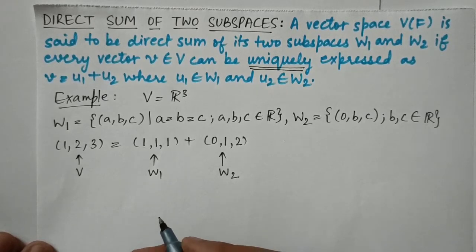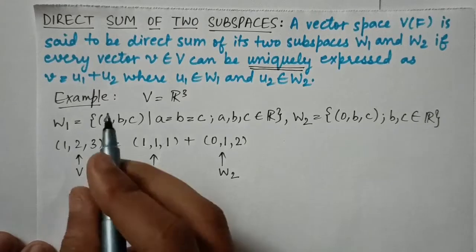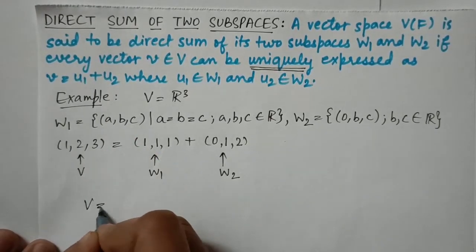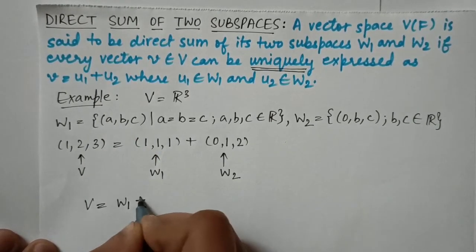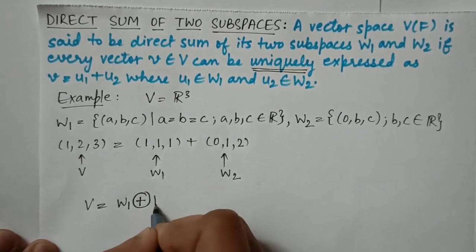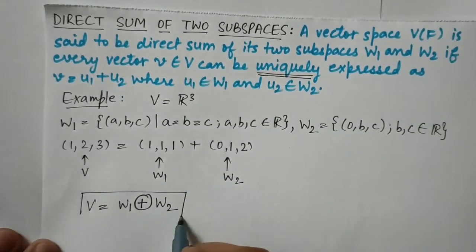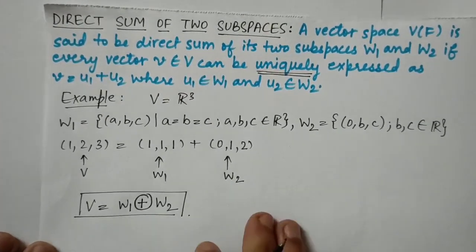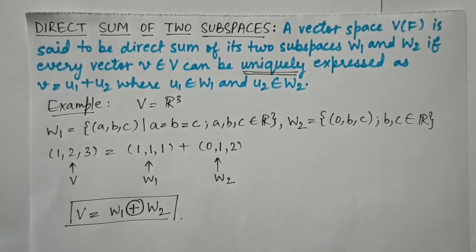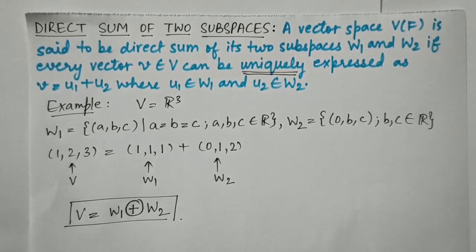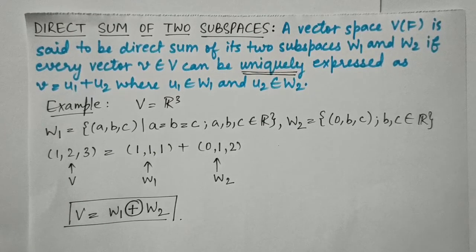The linear sum is expressed as W1 + W2, but the direct sum is expressed as W1 ⊕ W2, with a circle around the plus sign. That is the symbol representing the direct sum of subspaces. I hope you now know the definitions of linear sum and direct sum of two subspaces and the difference between them. If you have any doubts, ask in the comment section. Thank you, have a nice day!